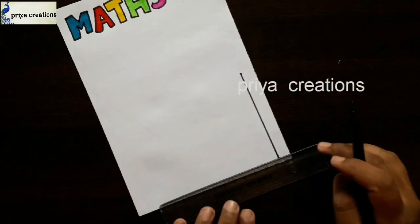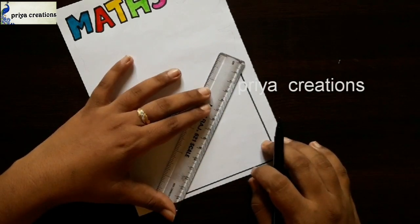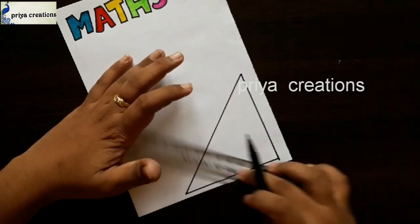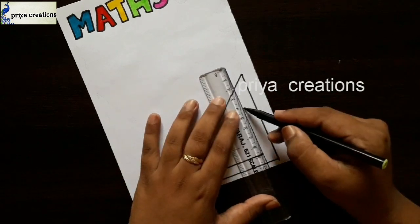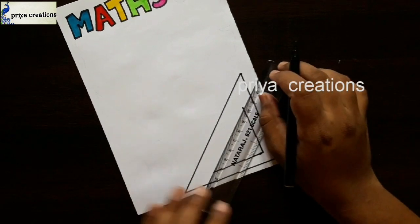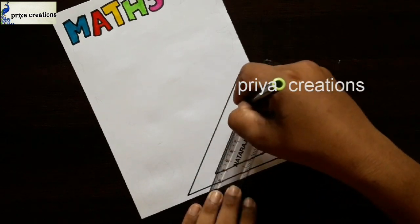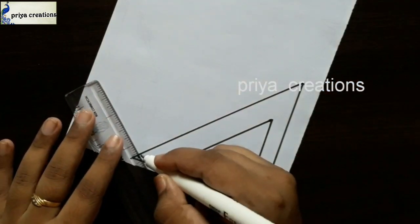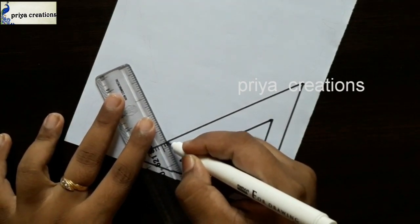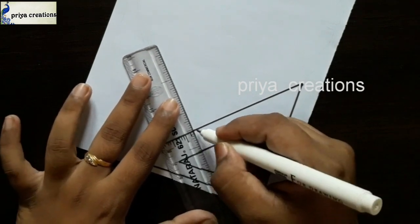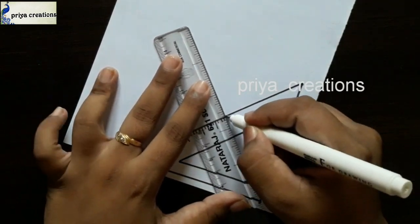And here I am using scale and black colored sketch pen for this drawing. Draw like this. Draw a triangle shape. Now I am using scale and black colored marker pen.